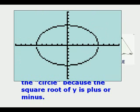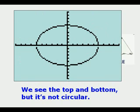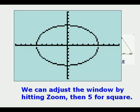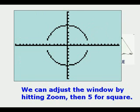we get an enclosed conic, but it's not circular. The reason it's not is because of the proportional distortion in the regular view screen window. We can adjust that by hitting zoom, and then five for square.